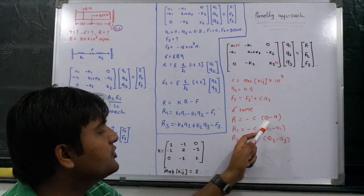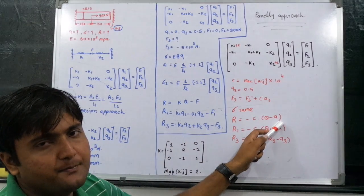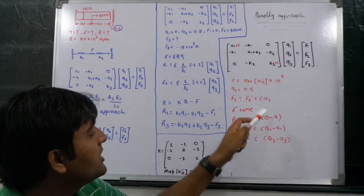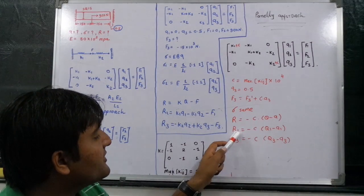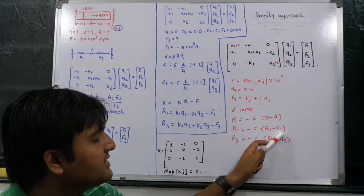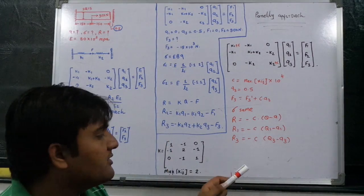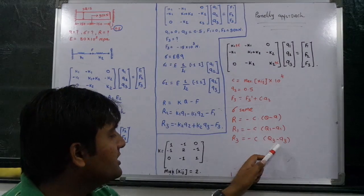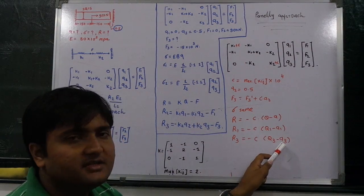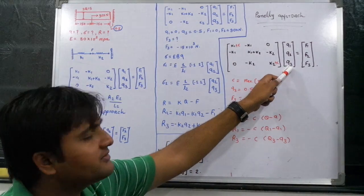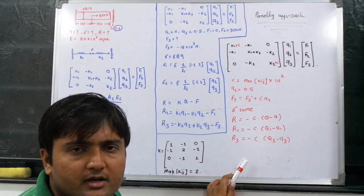Reaction would be minus C into Q minus A, where A is the gap value. Minus C times Q for first element: Q1 minus A1, A1 is equal to 0 because no gap is provided at node 1. But there is a gap at node 3, so minus C into Q3 minus A3. A3 value is 0.5, and Q3 value will be found after this equation, which is 0.5 actually.